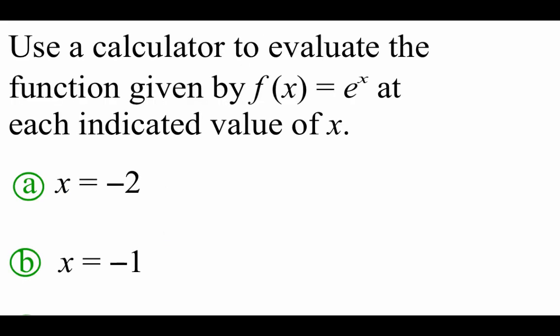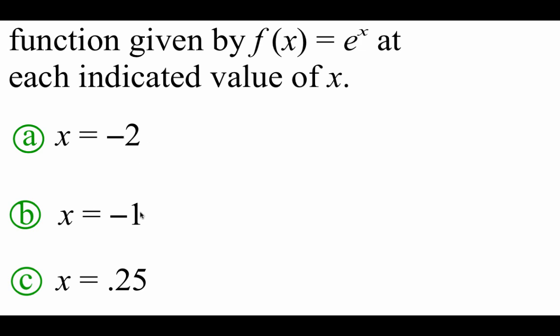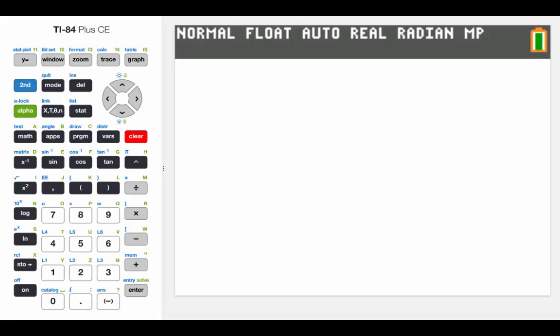Now what I want to do first with this exponential function is just get used to working with it and finding it on the calculator. We're going to evaluate this f(x) equals e to the x at three different x values using our calculator: negative 2, negative 1, and 0.25. To find that e to the x button on your calculator, look on the far left-hand side, and you'll find this ln button. Right above it as a second command, you'll see that e to the x. So if I go second, hit that ln button, it'll bring up the e, and it lets me put a power on this. The first power we said we were going to plug in was negative 2.